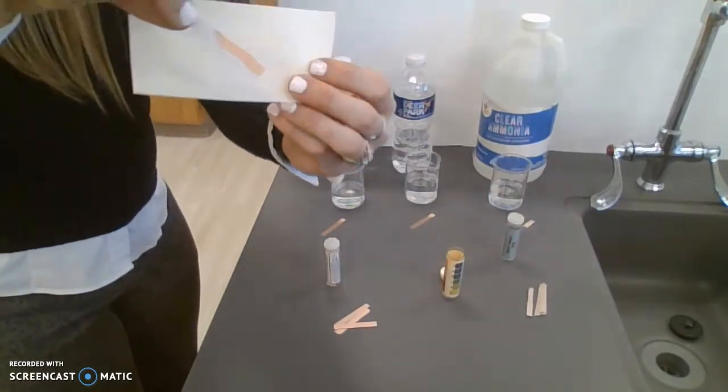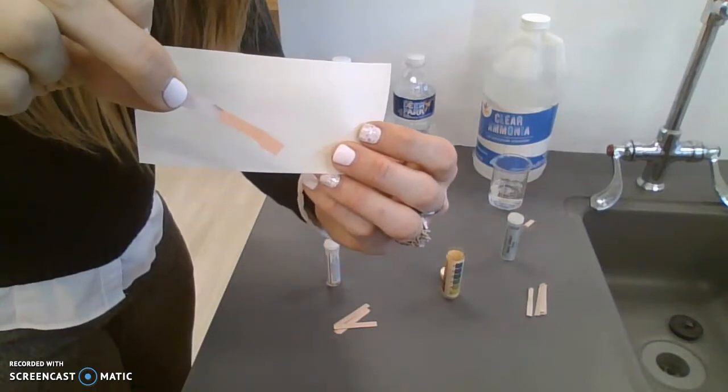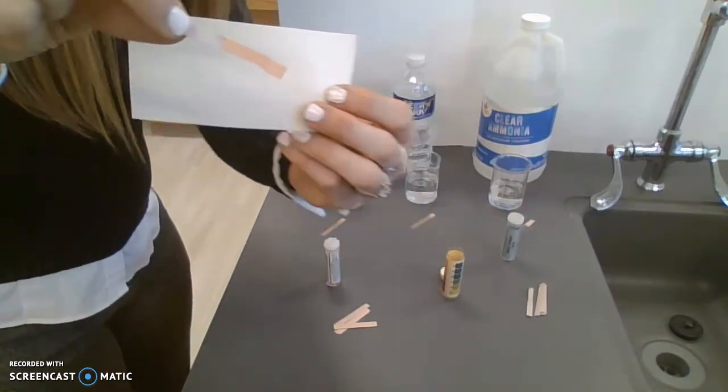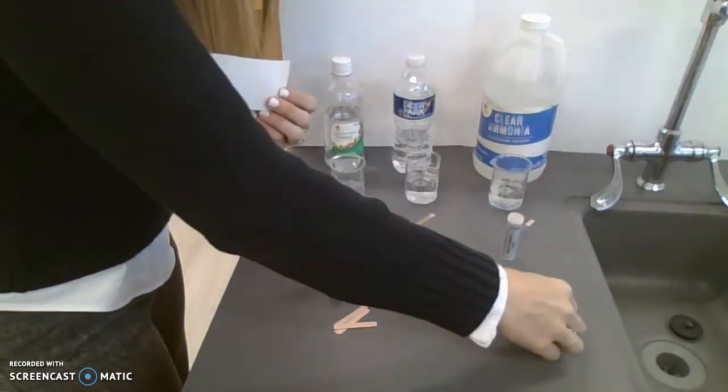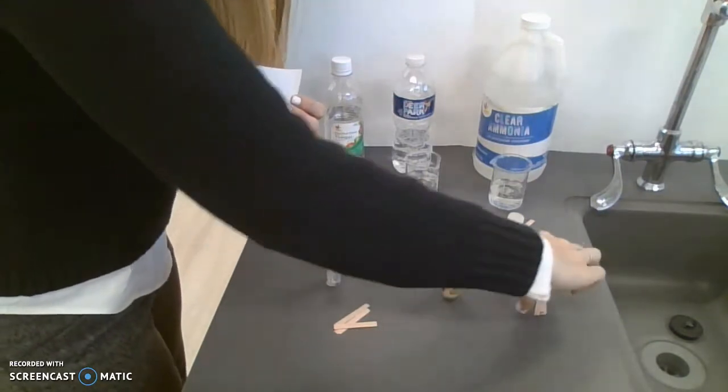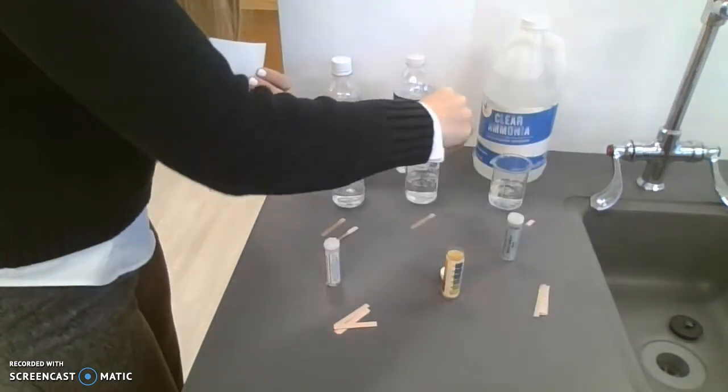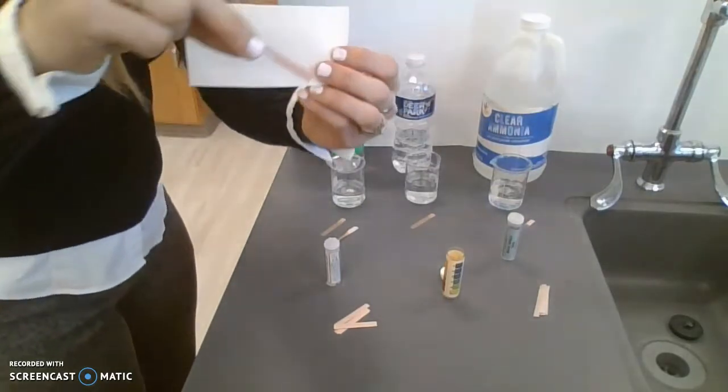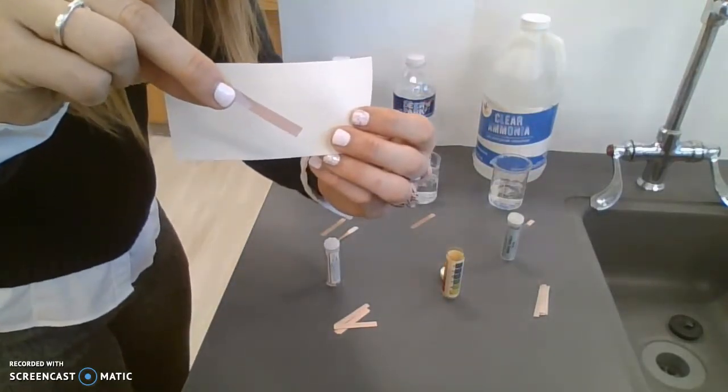If I take blue litmus paper and dip it into water, you can see more of a distinction between the blue near my fingers and the wet part at the bottom. Blue litmus in water will just appear wet, so it doesn't change red or blue.